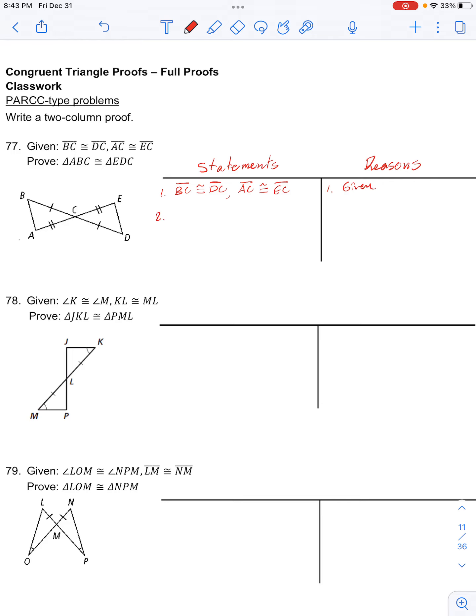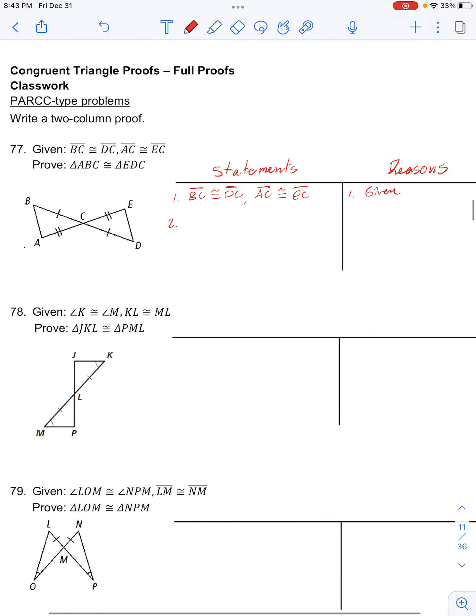Then number 2, we can deduce from the figure that these shared vertical angles here are going to be congruent because it's one of the properties of vertical angles that they have the same measure and so they will be congruent.